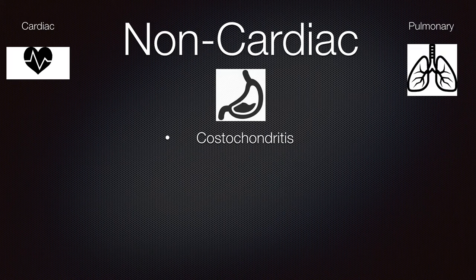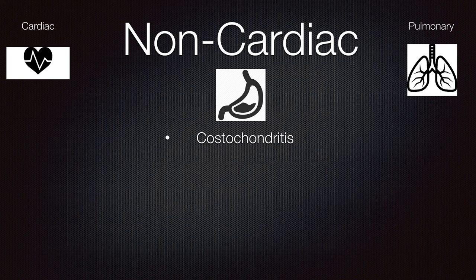Costochondritis is a musculoskeletal cause of chest pain, and musculoskeletal causes are actually the most common causes of chest pain. They are characterized by inspiratory pain — pain when taking a deep breath — and can be reproduced by palpation. You can push down on that spot with a finger and reproduce the pain, which is significantly different from myocardial infarction. There are no EKG changes with costochondritis.